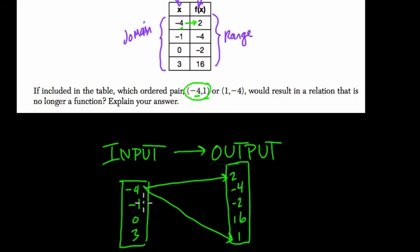You could say it this way. Negative 1 does map to negative 4, 0 maps to negative 2, and 3 maps to 16. But negative 4 connects to two different outputs, so it's not a function. And just to really confirm what's happening here, 1 comma negative 4 would not be an issue.